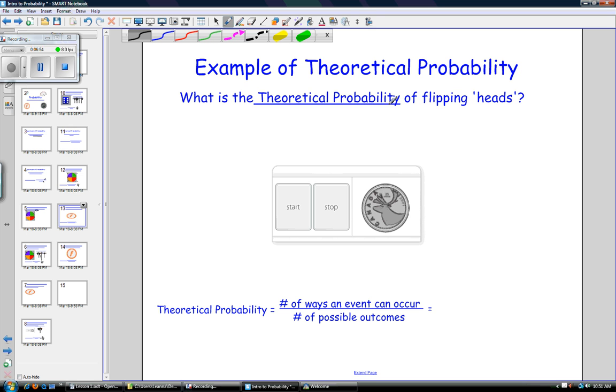What is the theoretical probability of flipping heads? Well, how many different ways can you get heads? Just one. And what is the number of possible outcomes? Well, you can get heads or tails.